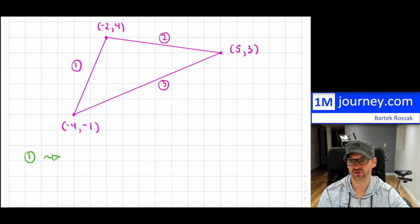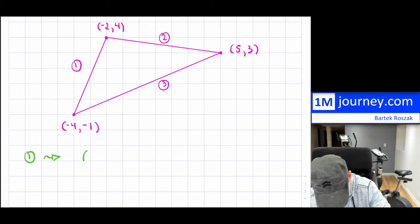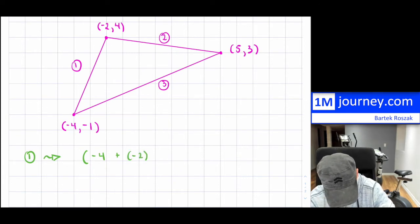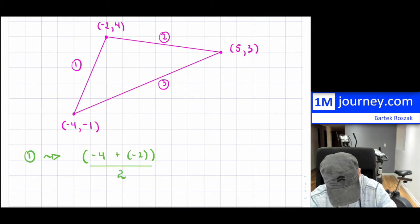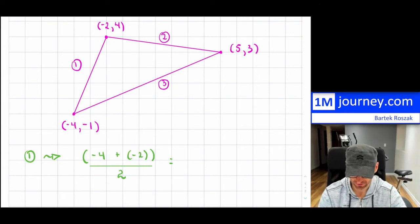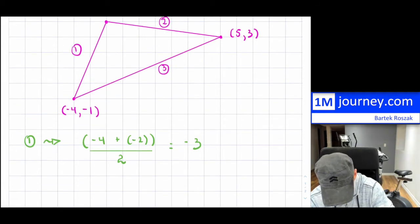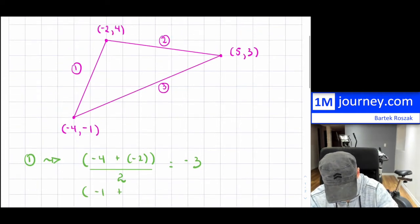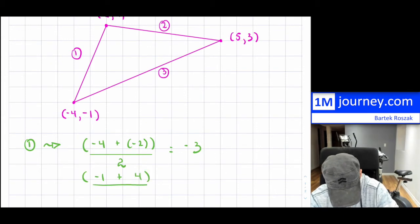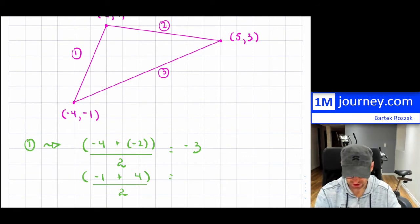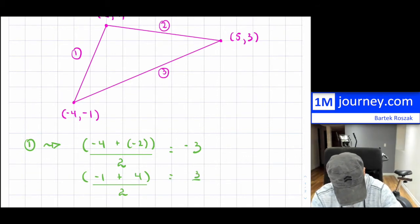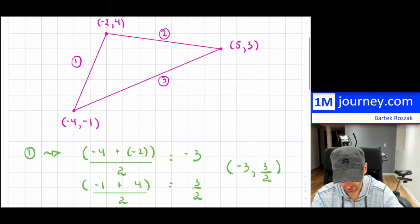I'll do that for every single line. For the first one, I'm going to take the x values. The x value is negative four plus the other x value negative two, and I'm going to divide this by two. That is negative six divided by two, which is negative three — that's the x value. My y value would be negative one plus four, divided by two. That's going to be three over two. My point is negative three, three over two. This is the midpoint.